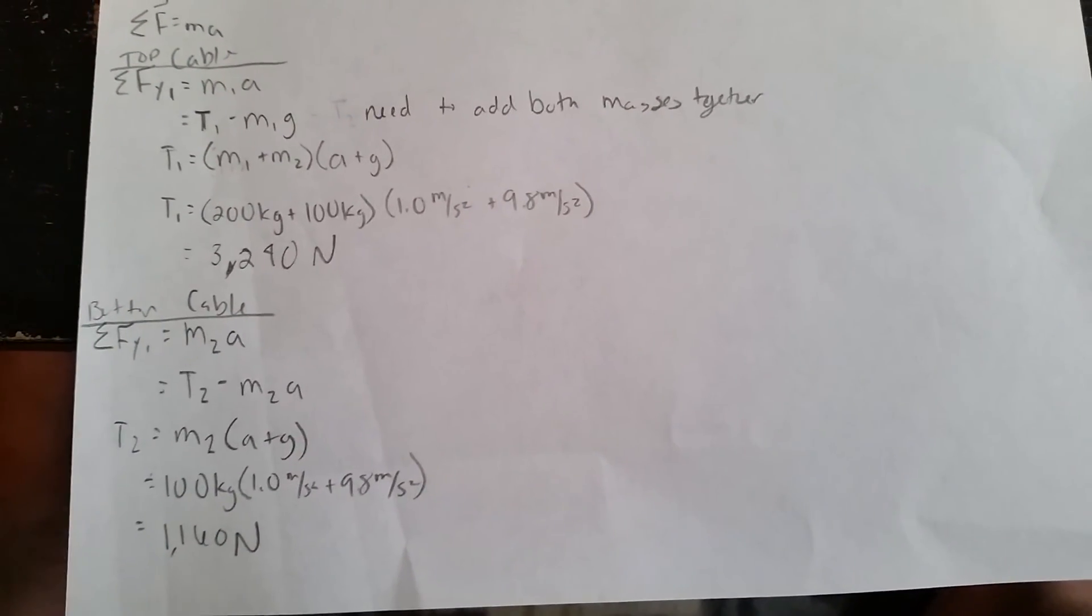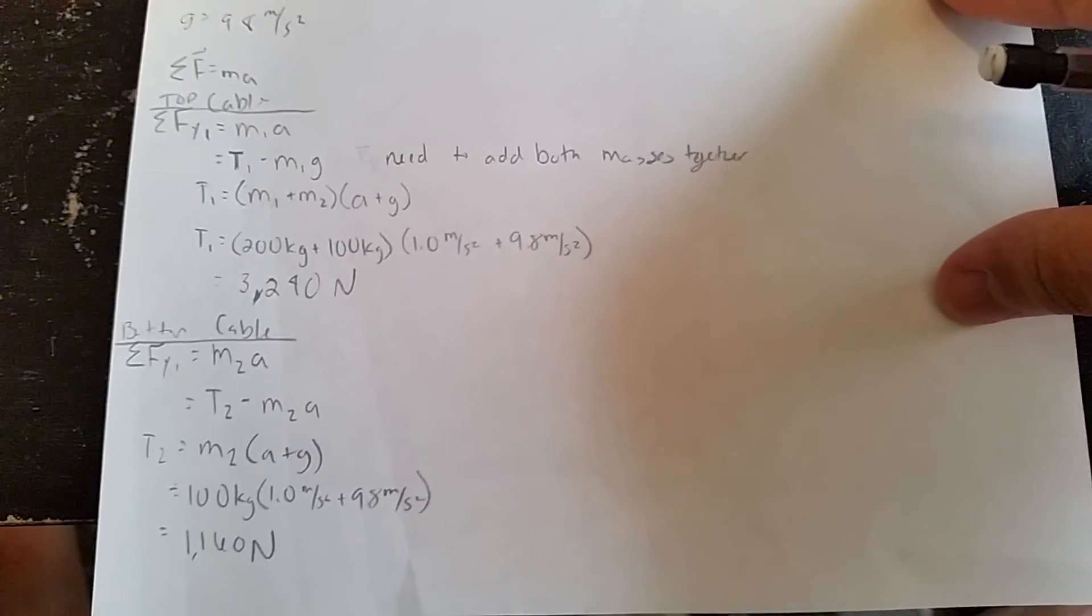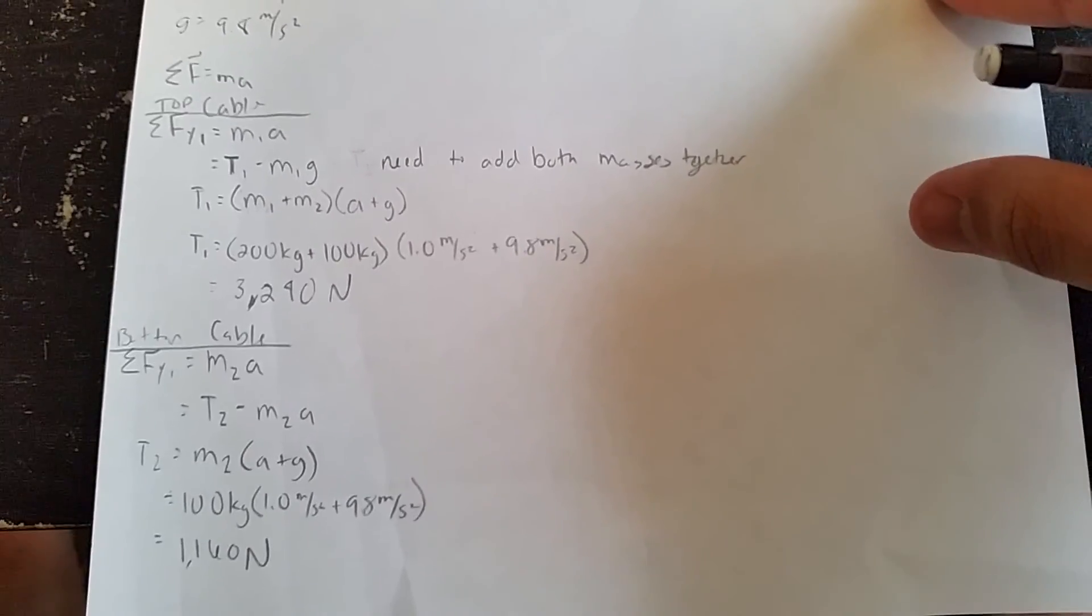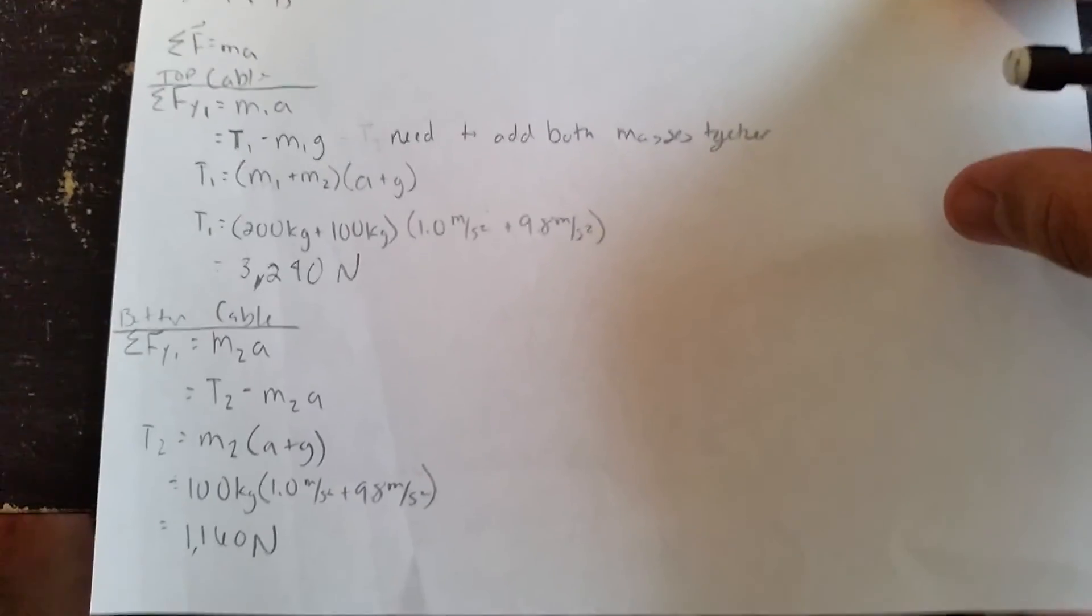So then I can add T2 to both sides, which will give me T2 is equal to m2 times acceleration, which is T2 is equal to m2 times a plus g. So that gives me 1160 newtons.